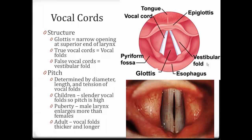Children have very slender vocal folds, so their pitch is high. At puberty, the larynx enlarges — particularly in males — in response to testosterone. This makes the vocal cords longer and thicker, causing the male voice to drop significantly, though females also experience a slight drop. The change happens so fast that the brain hasn't adjusted to the new vocal cords, which is why males in puberty often experience that cracking or breaking sound in their voice. Adult vocal cords are thicker and longer, which is why adult voices tend to be lower.